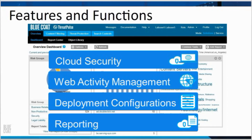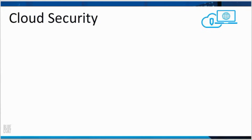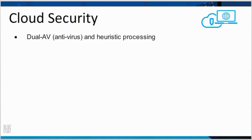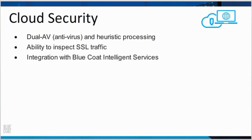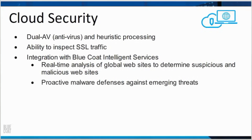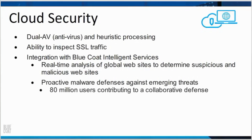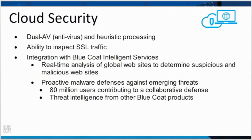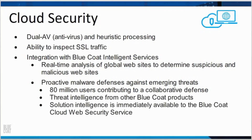The Bluecoat Cloud Web Security Service provides dual antivirus and heuristic processing, the ability to inspect SSL traffic, integration with Bluecoat Intelligent Services, real-time analysis of global websites to determine suspicious and malicious websites, proactive malware defenses against emerging threats, 80 million users contributing to a collaborative defense, threat intelligence from other Bluecoat products, and solution intelligence immediately available to the Bluecoat Cloud Web Security Service.